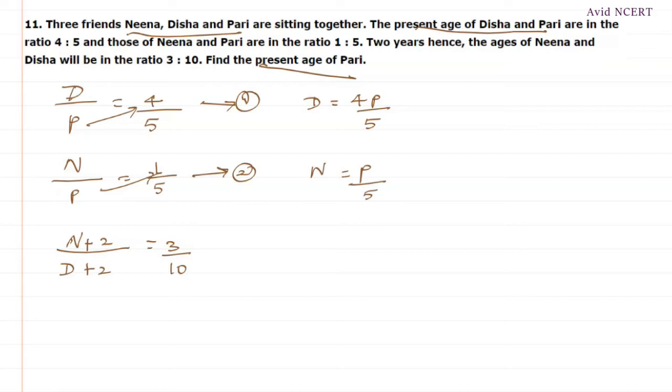So, we can substitute the value of D and N, that is Disha and Neena in the third equation. So, substitute the value of N. P by 5 plus 2 divided by 4P by 5 plus 2, which equals 3 by 10.